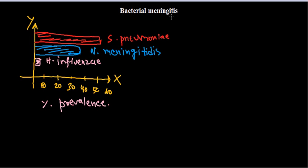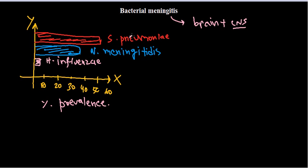Meningitis is a disease of the brain and central nervous system (CNS). It results from some kind of miscommunication or dysfunction between nervous system cells — neurons — leading to altered personality and brain damage. These are the general symptoms seen across all types of meningitis.